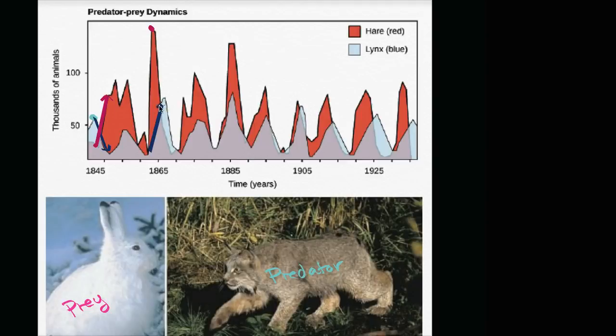So their population starts to increase, and as the predator population increases, well the prey population is going to decrease. So this is real data showing the snowshoe hare, the prey, and the Canadian lynx, the predator, over many, many decades to show this predator-prey cycle.